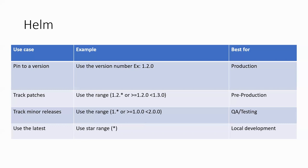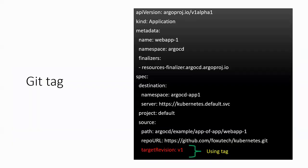So this is what we discussed, and let's see some examples of how you can define the details. The first thing is tags. If you are using a tag like v1, v2, or v3, you have to use target revision v1, using your repository URL and the third option you have to use for target revisions.